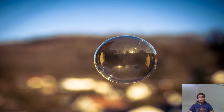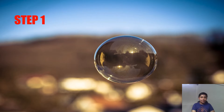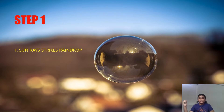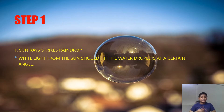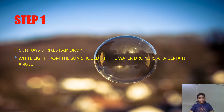The first step in how rainbows are formed is that sun rays strike the rain droplet. The white light from the sun must strike the water droplet at an angle. If it's not at an angle, the droplet will just let the ray pass through it and there will be no rainbow. So it must hit at a certain angle — that's the first step.